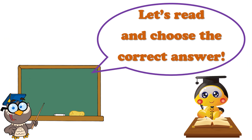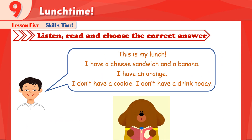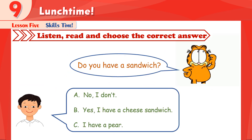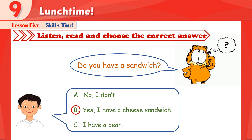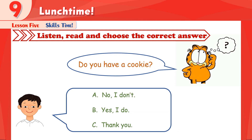Now we come to the first student. Let's read and choose the correct answer. This is my lunch. I have a cheese sandwich and a banana. I have an orange. I don't have a cookie. I don't have a drink today. Question 1: Do you have a sandwich? B is the correct answer — yes, I have a cheese sandwich. Question 2: Do you have a cookie? The answer is A — no, I don't.